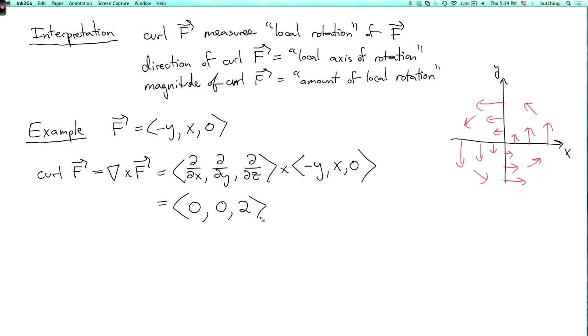So this has magnitude 2 and points in the z direction, which corresponds to the fact that this vector field looks like it's rotating around the z-axis. Now you can have a more complicated vector field, which isn't as simple as this, but curl in general still gives you some kind of measure of local rotation of the vector field.